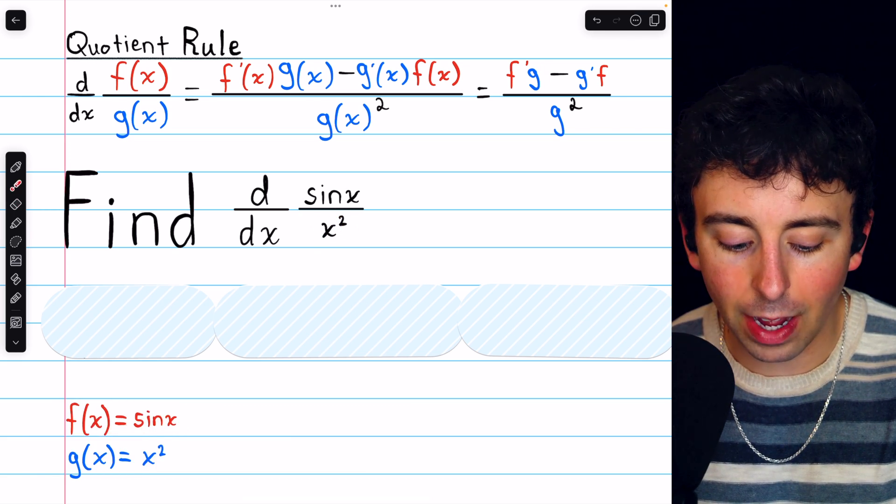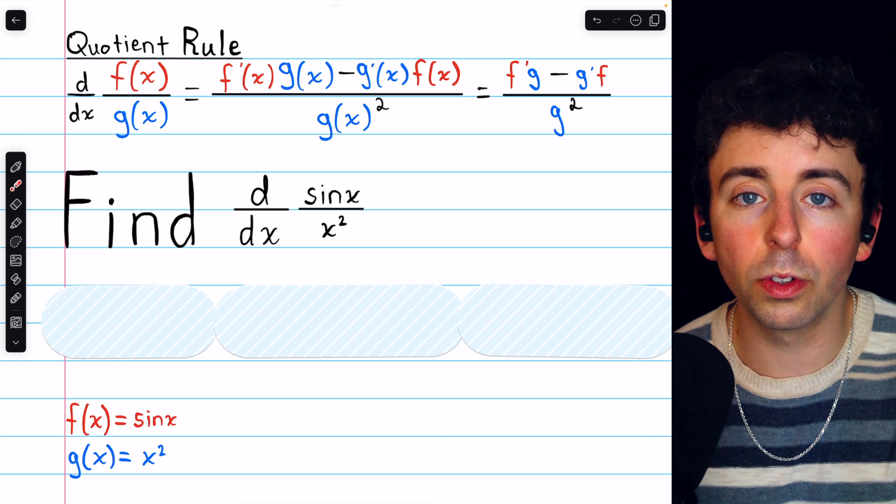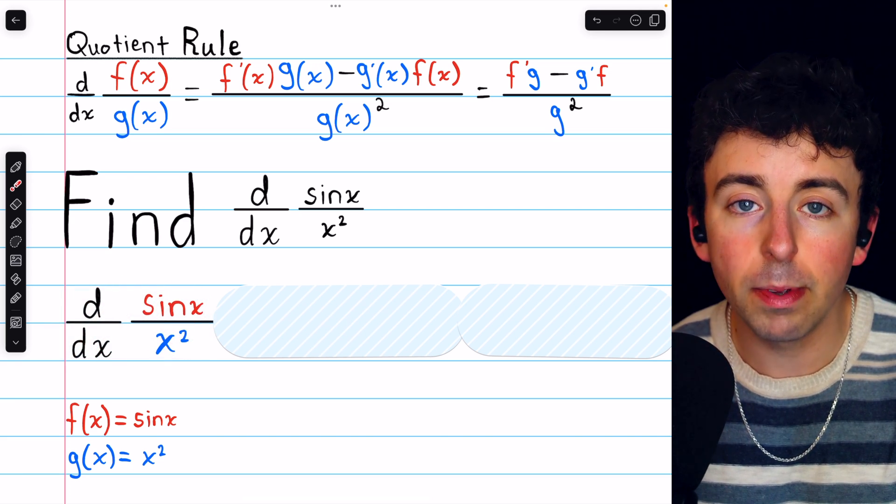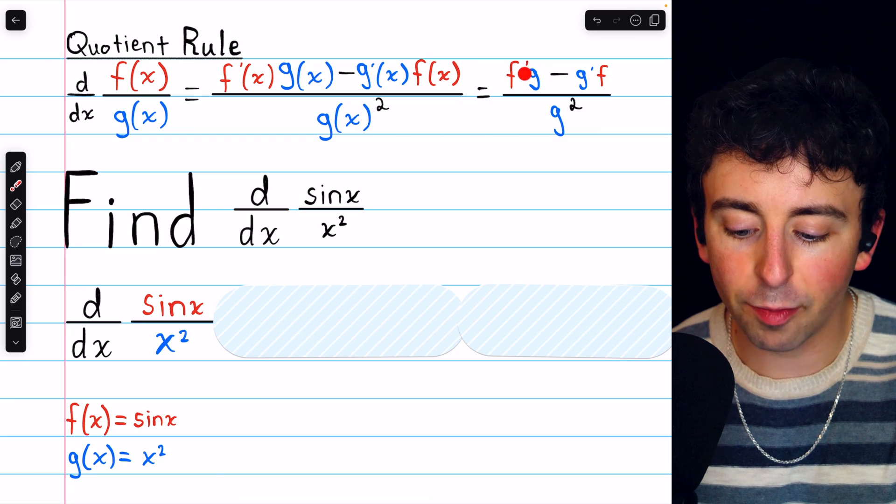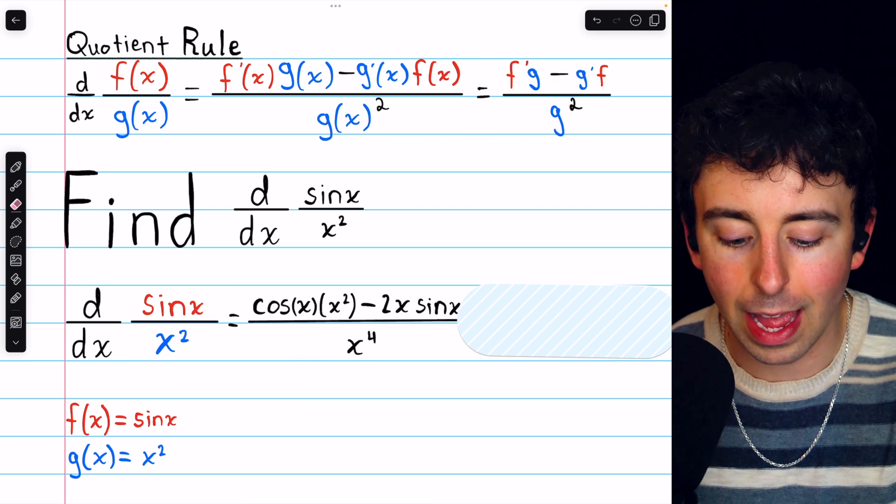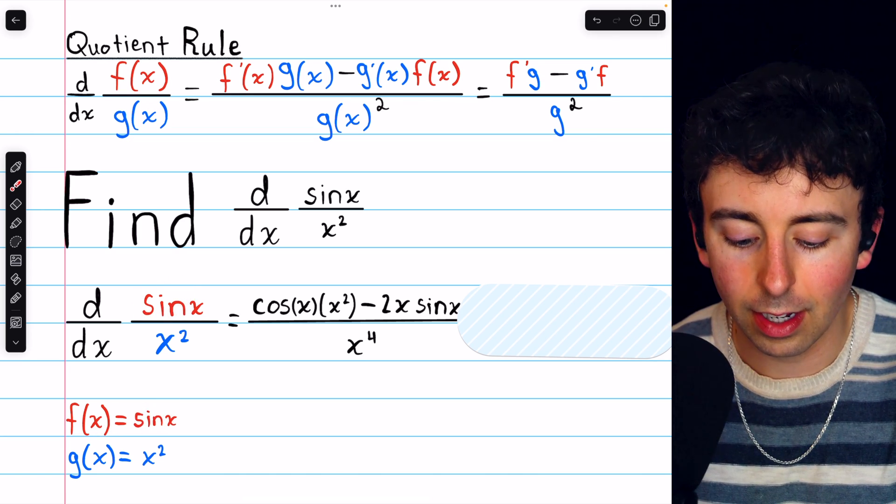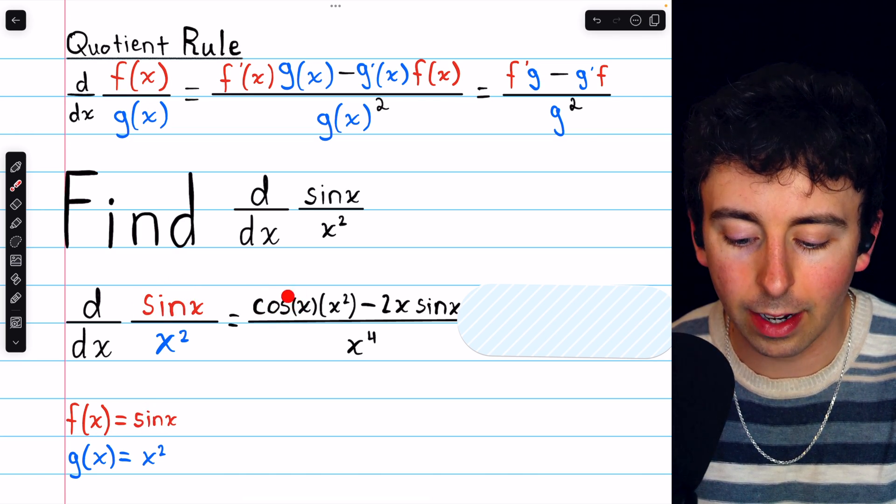So having identified those two pieces, let's proceed using the quotient rule to take the derivative. The derivative of sine x over x squared beginning with the numerator is f'g minus g'f. f' is the derivative of the top function sine x, and the derivative of sine x is cosine x.